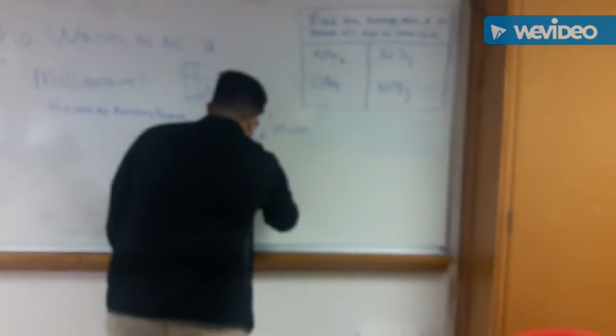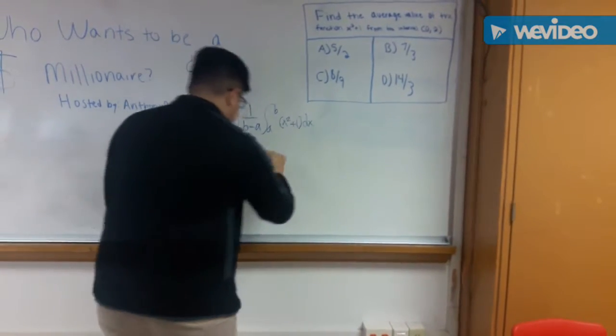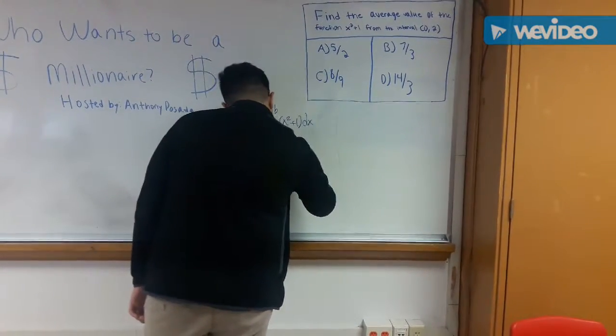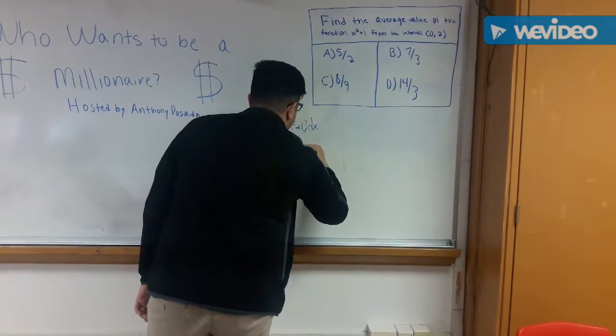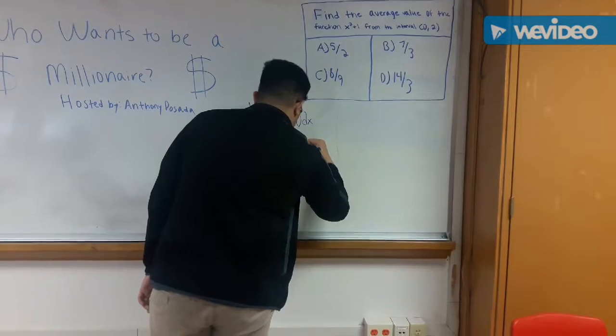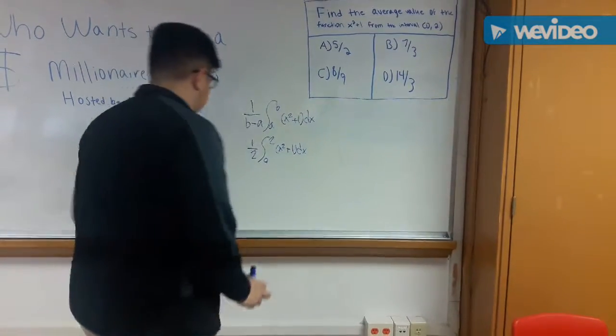Okay, so I would have 1 half to the integral of 0 to 2 of the function, and then I'll just find the antiderivative of that. Yes. Alright, let's see.